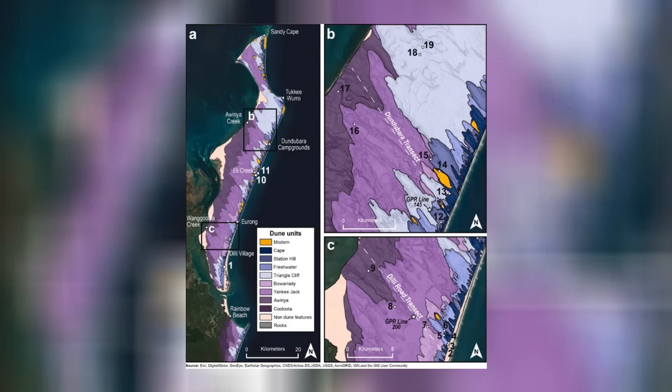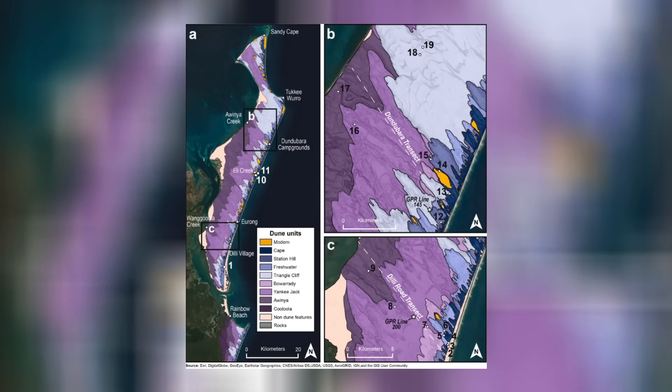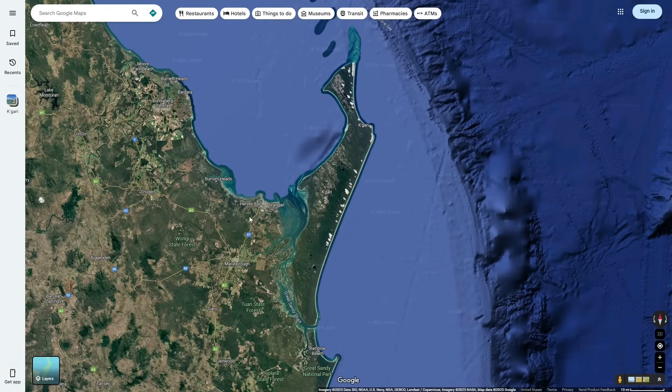The first place that the sand was deposited was in the northeast by the rocky outcroppings, but the island quickly expanded outwards. Here's the map showing the ages of the sand on Garry. Today, the oldest sand we can observe on the surface is to the west of the island; however, this is just because the eastern portions keep being overlaid by new sand. So those are the processes for how Garry formed.